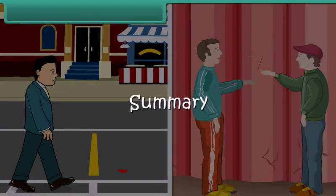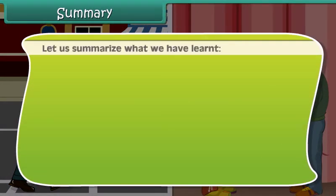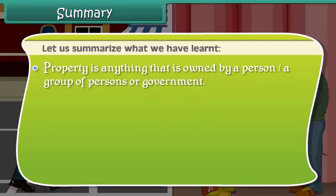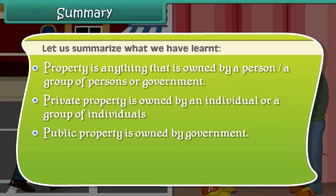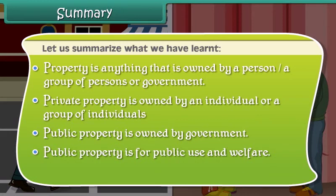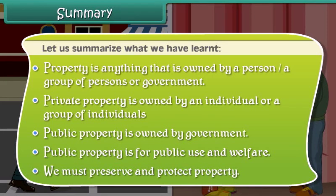Let us summarize what we have learned. Property is anything that is owned by a person, a group of persons, or the government. Private property is owned by an individual or a group of individuals. Public property is owned by the government, and it is for public use and welfare. We must preserve and protect property.